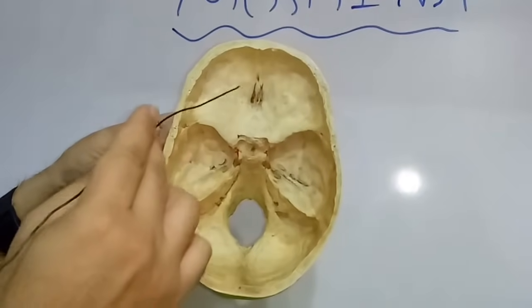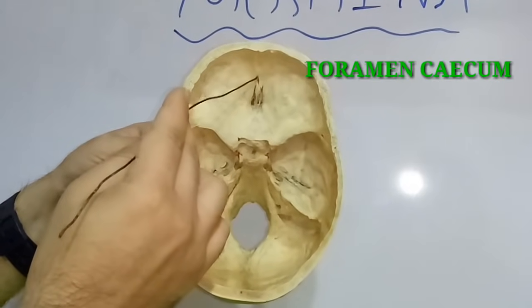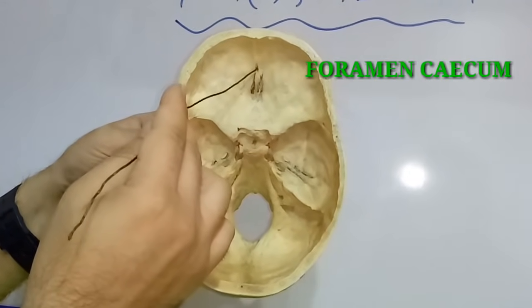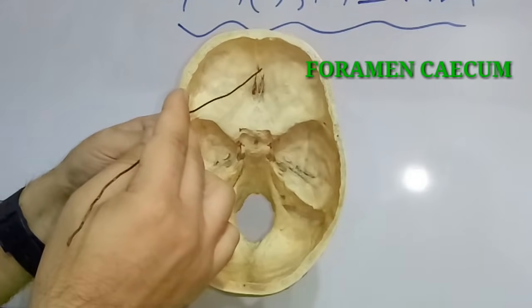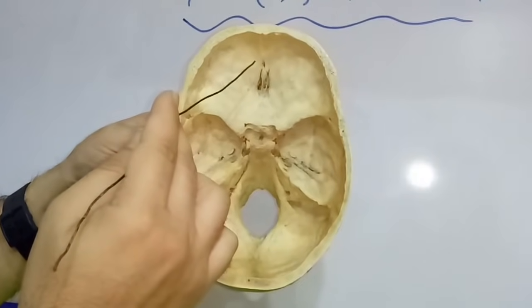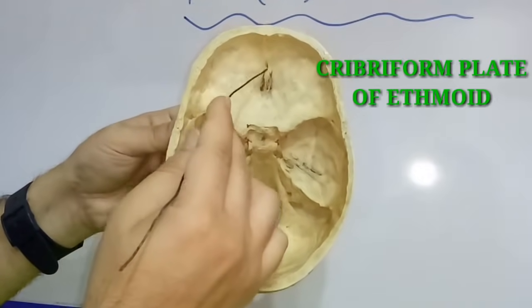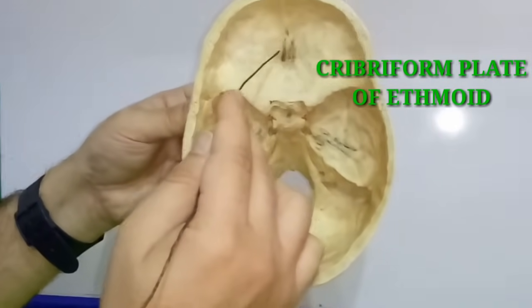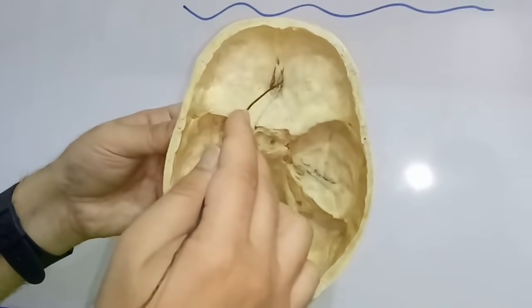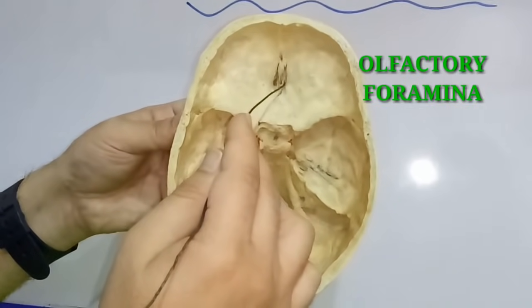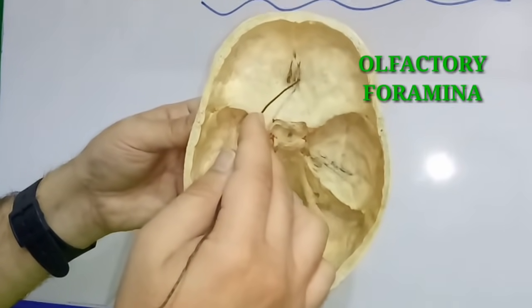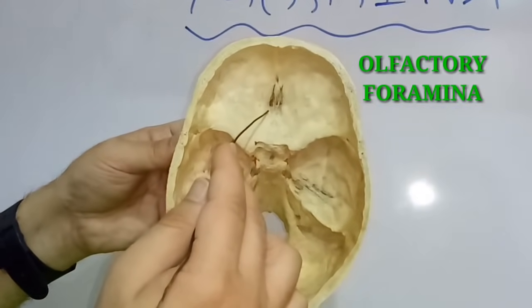In the anterior cranial fossa, in the median plane anteriorly, we see a small foramen — the foramen cecum. The foramen cecum is usually a blind foramen, but sometimes if it is patent, it transmits a vein from the nose to the superior sagittal sinus. Just behind it is the cribriform plate of the ethmoid bone, in which we can see numerous foramina known as olfactory foramina. The olfactory foramina of each side transmit about 15 to 20 filaments of the olfactory nerve, which is the first cranial nerve.